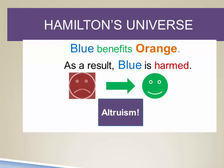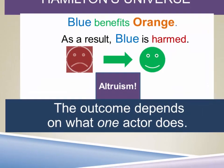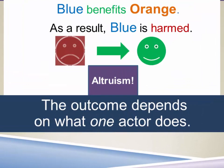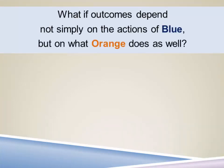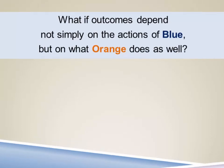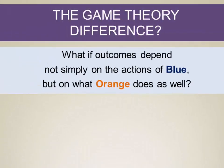What's interesting is that in developing this model, it's based entirely on the actions of one actor. It's blue's action that makes this altruism — it doesn't depend upon what orange does in return. But what if the outcomes depend not simply on what one actor does, but on what the other actor does as well? And this is the difference that game theory introduces into modeling social behavior.